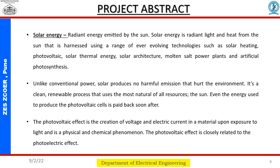Unlike conventional power, solar produces no harmful emissions that hurt the environment. It is a clean, renewable process that uses the most natural of resources — the sun. The energy used to produce the photovoltaic cells is paid back soon after. The photovoltaic effect is the creation of voltage and electric current in a material upon exposure to light, a physical and chemical phenomenon closely related to the photoelectric effect.